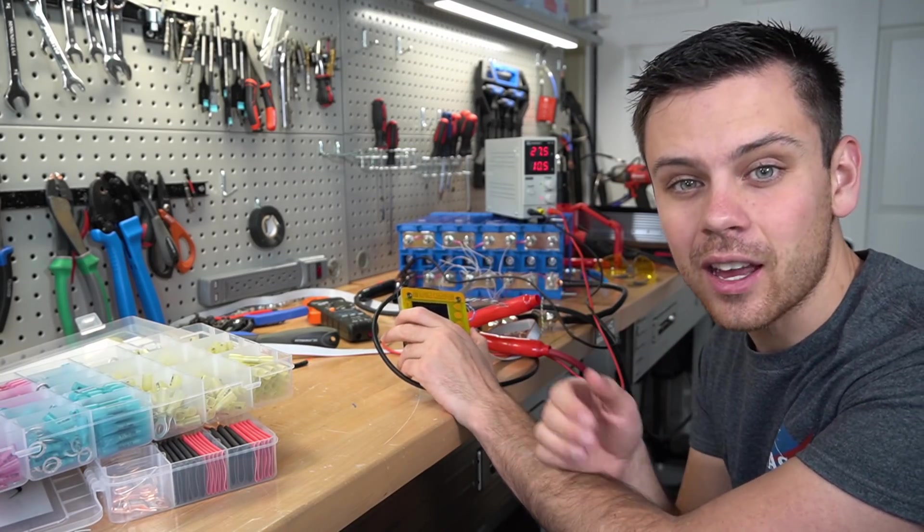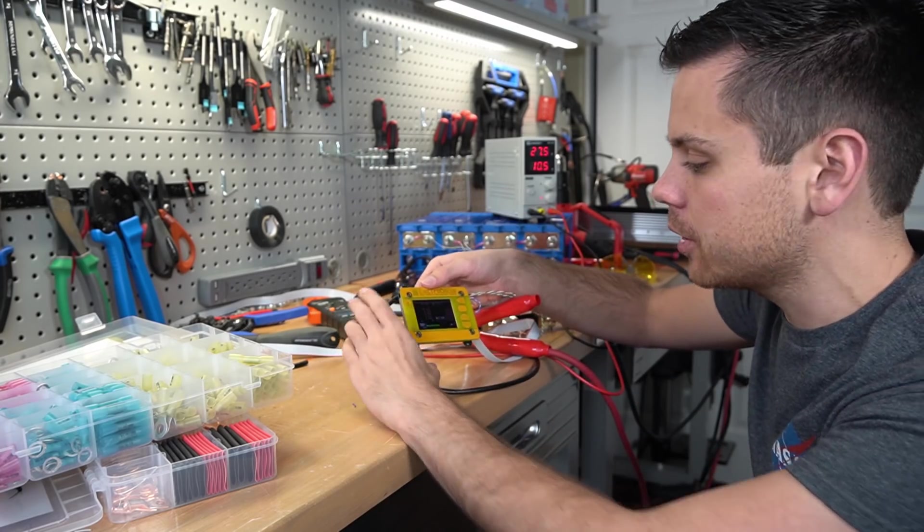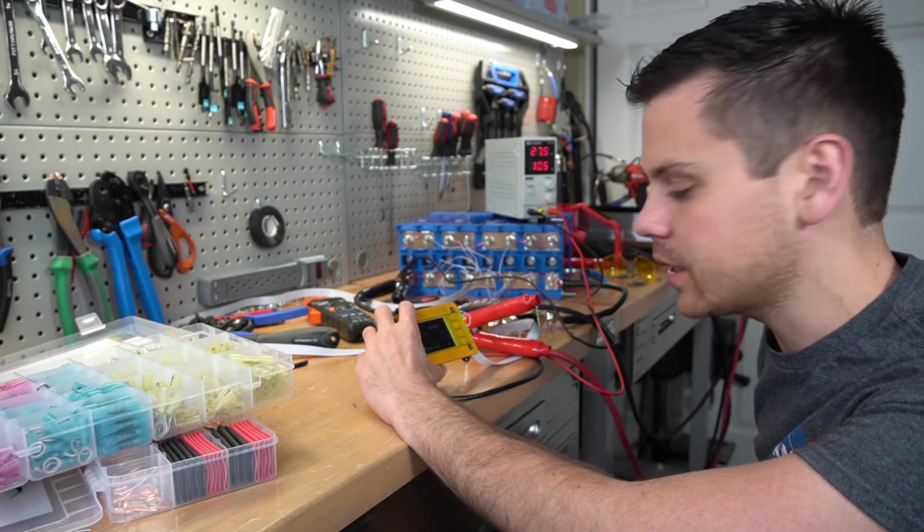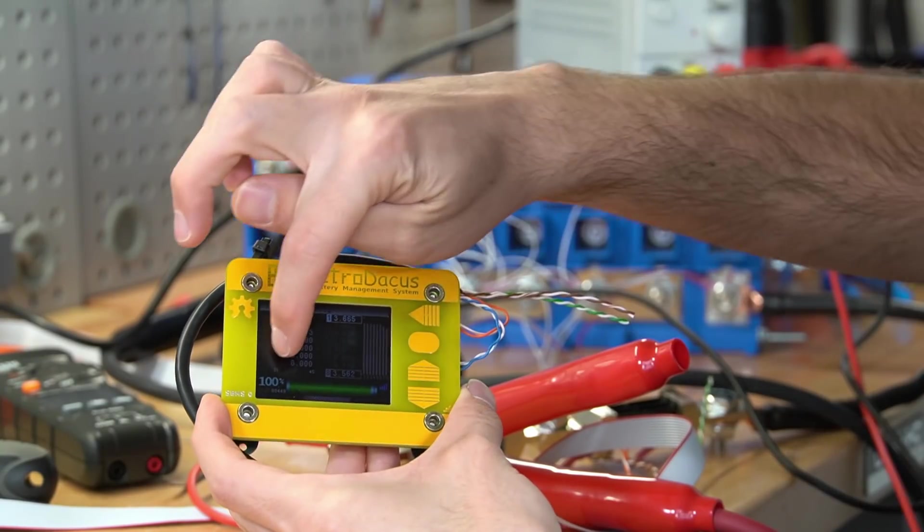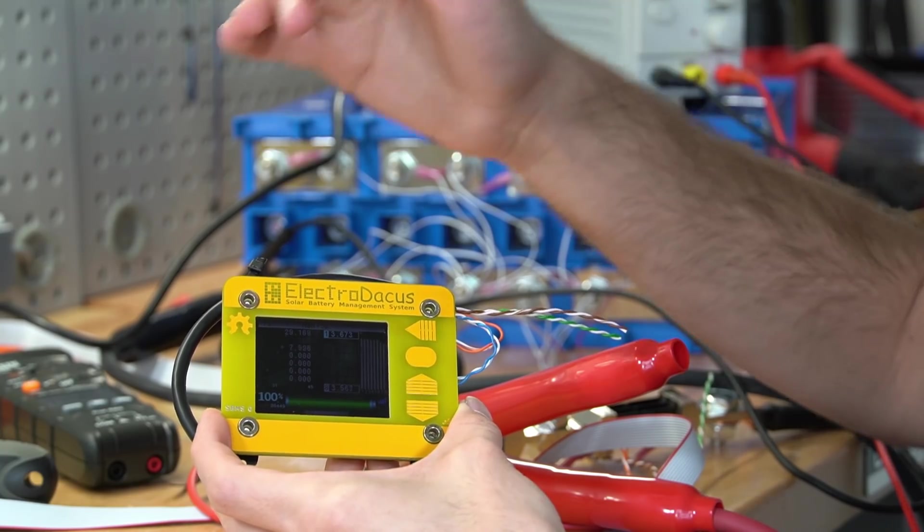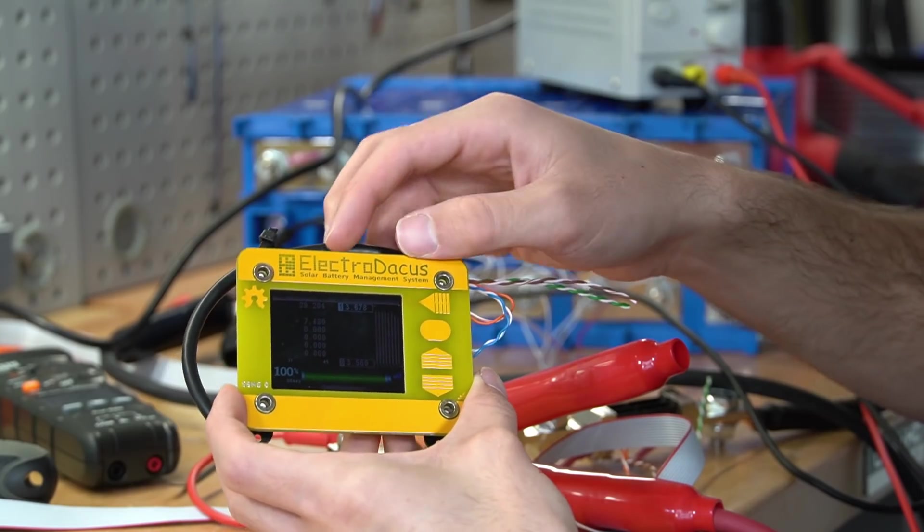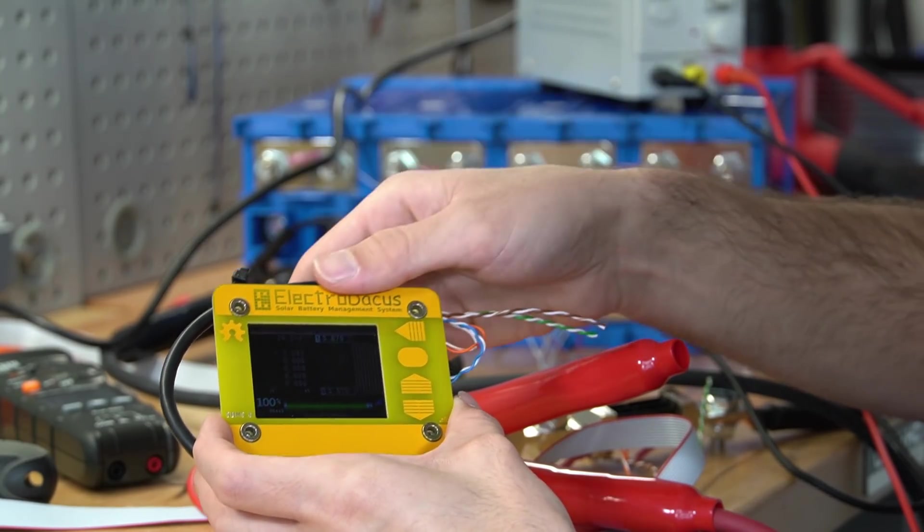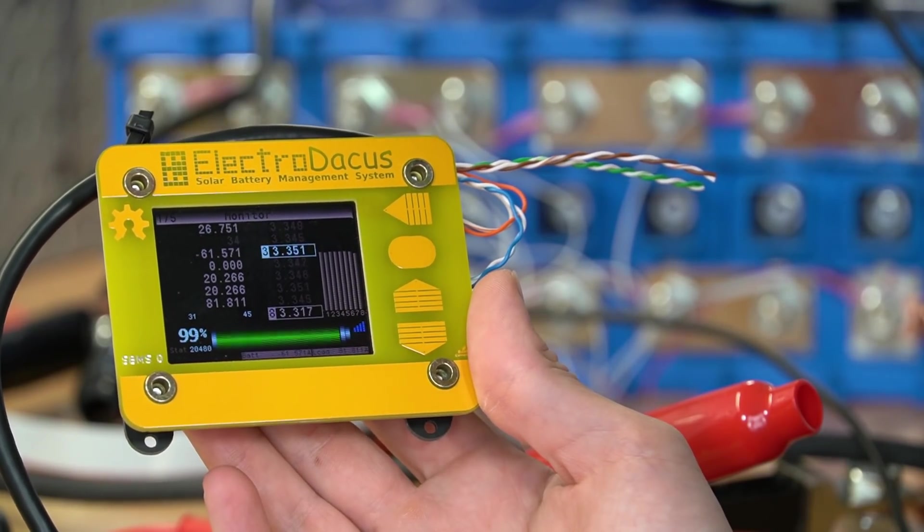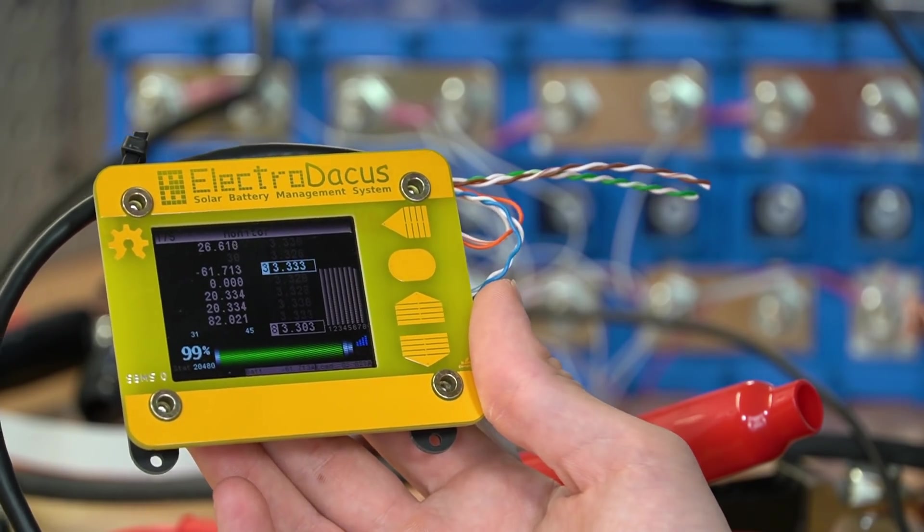So what we want to do now is cycle it so that we can give it a state of charge reading because right now the numbers are all over the place. But typically if you charge it up and then discharge it all the way down, it will actually reset itself. So let's do that real quick. Now the battery is fully charged and we're at 100% on here. So it reset it once it hit a high state of charge and the current is finally dropping. We're at 3.5 to 3.6 volts per cell. So now we're going to discharge the battery and see what happens. Now we're pulling 61 amps and you can see the state of charge is already starting to decrease. So let's come back in a few minutes and see what happens.